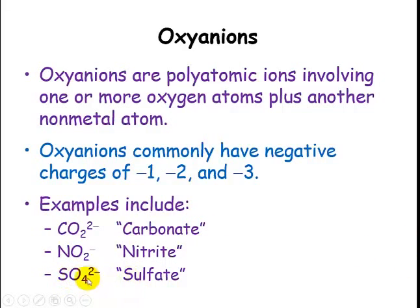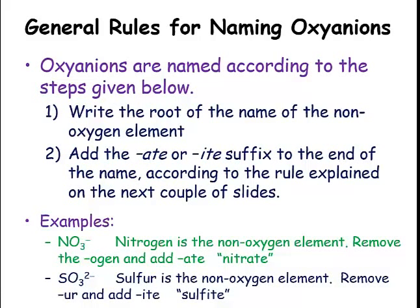Let's look at this last example. Sulfur is the other nonmetal element. We're going to take the root of that name, 'sulf', and then the '-ate' for oxygen — so sulfate. Here are our general steps: first, write the root of the name of the nonoxygen element, just as we did when naming ionic compounds, and then add the '-ate' or '-ite' suffix.